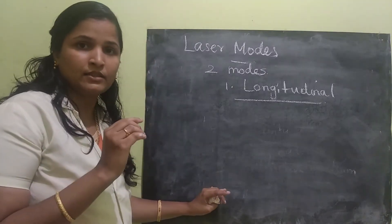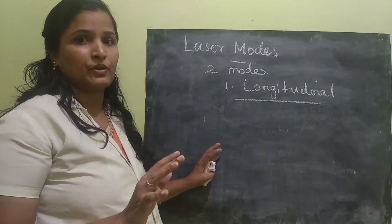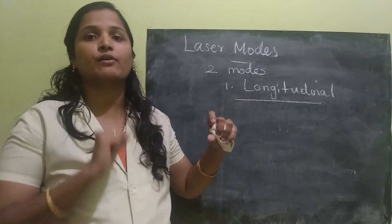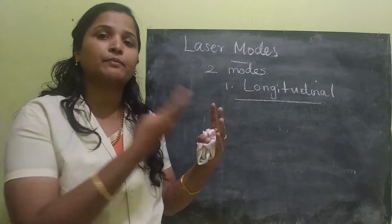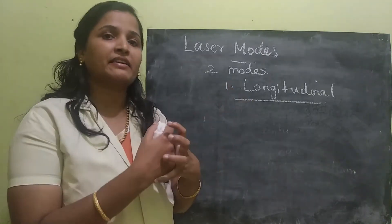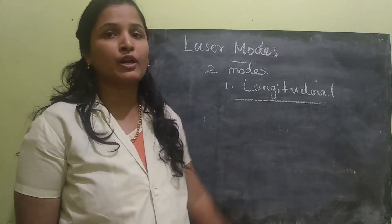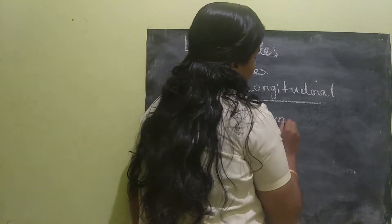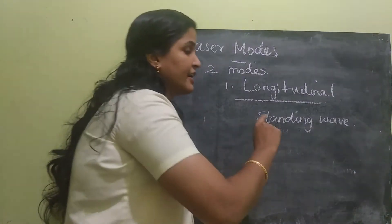Longitudinal mode means the number of standing waves in the laser path along the optical axis. The optical resonator has two reflecting mirrors, and inside that it has an active medium. The atoms excited will be constantly reflected to and fro between the two mirrors. After getting enough energy, some radiation will be emitted along the direction of the mirrors — that is the longitudinal mode, and it will follow a standing wave pattern. So longitudinal mode means the number of standing waves it is having.